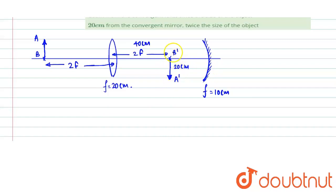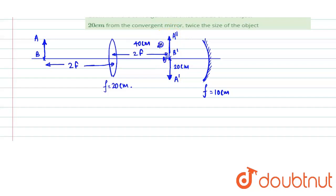This object A'B' is placed at the center of curvature of the mirror. As we know, when the object is placed at the center of curvature, its image is formed at the center of curvature itself, and it is inverted. So A''B'' is the final image — the image of A'B'. The size of A''B'' is the same as A'B', so it is again 20 centimeters.